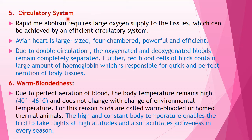The fifth anatomical adaptation is the circulatory system. Rapid metabolism requires a large oxygen supply to the tissues, achieved by an efficient circulatory system. In birds, there is a completely divided four-chambered heart with complete double circulation. The heart is large, powerful, and efficient. Due to double circulation, oxygenated and deoxygenated blood remain completely separated. The red blood cells of birds contain large amounts of haemoglobin, responsible for quick and perfect aeration of body tissues.